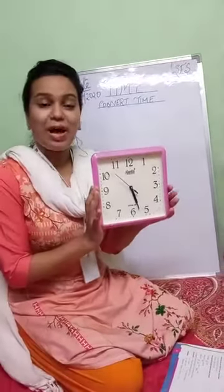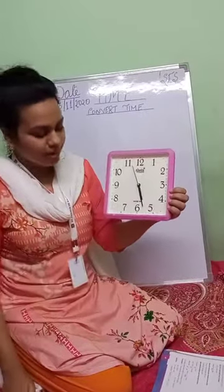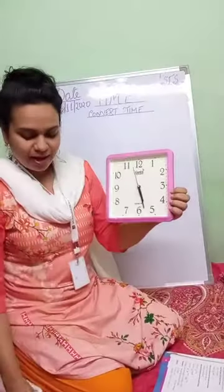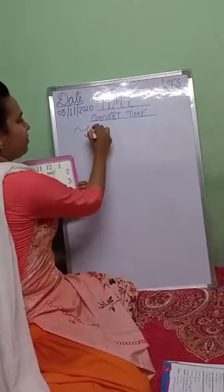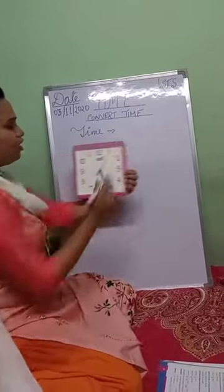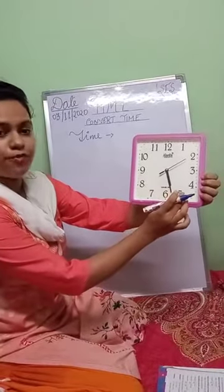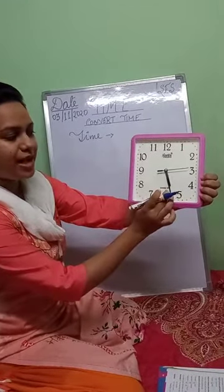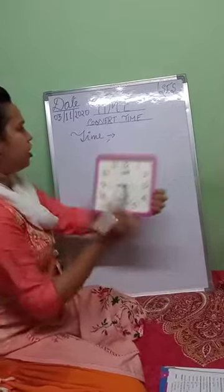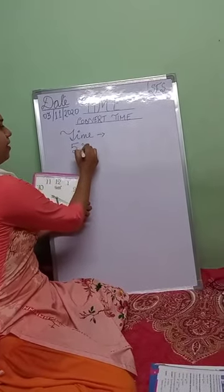I'm again holding a clock. What is the time showing? The hour hand is near six but it is also near five — it is between five and six — and the minute hand is near six, so the time is five thirty.